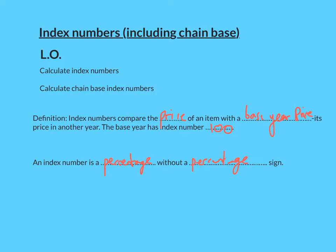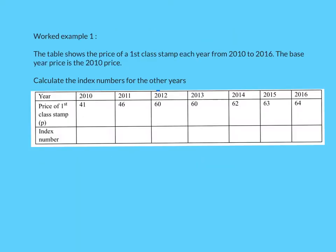Let's look at a very simple example. We're looking at the price of first class stamps every year. There is a huge jump — 41p, 46p, and all of a sudden 60p. Looking at the index numbers, the base year is 2010, so the index number for the base year is always 100.